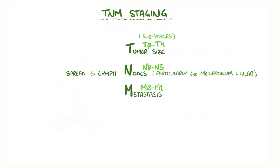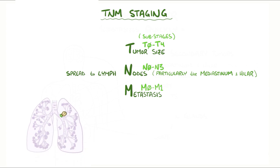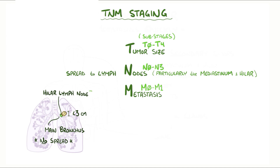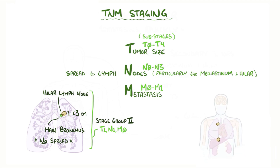The combinations of these substages determine the stage group, assigned 0 to 4. For example, if the diameter of the tumor is less than or equal to 3 cm, not in the main bronchus, has invaded the hilar lymph node on the same side of the chest, but has not spread outside the chest to other tissues, it's categorized as T1, N1, M0, and can be considered stage group 2. But if the tumor metastasizes to a secondary site, it's considered M1 and stage group 4 regardless of its T or N value.